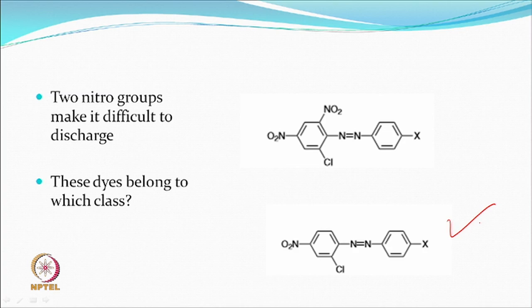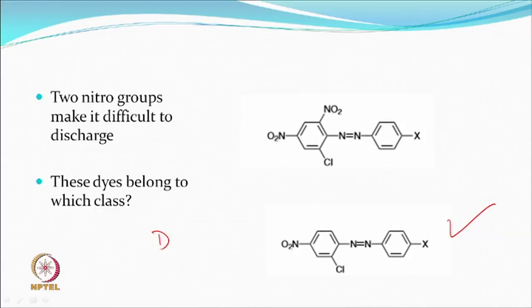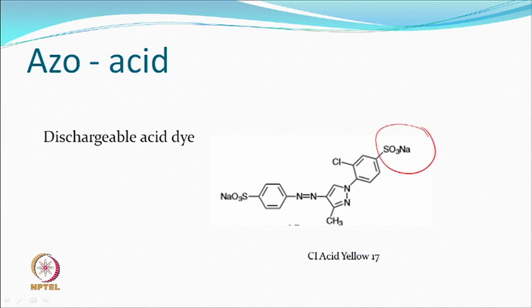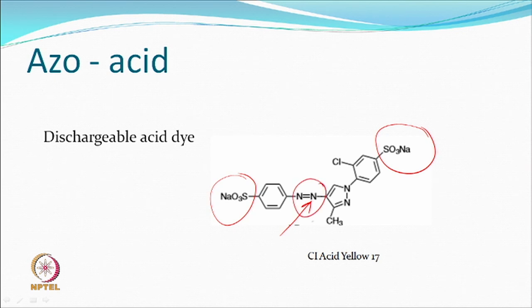There is no anionic group and no reactive group in these structures. If you want a similar dye to be an acid dye for nylon, wool, or silk, you would add sulfonic acid groups. So if you can add such groups, you can think of it as an acid dye — but it still has the most important chromophore, the azo group, which can be discharged.